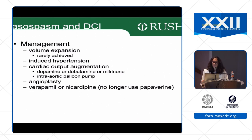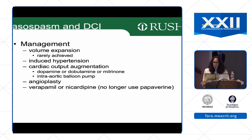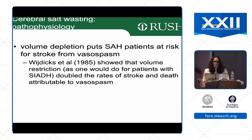Once the aneurysm is treated, we liberalize blood pressure goals — mean arterial pressure from 70 to 150. If the patient clinically deteriorates, we start a pressor to augment blood pressure, and patients do respond to this. You can also augment cardiac output using dopamine, dobutamine, or milrinone, or an intra-aortic balloon pump if cardiac function is compromised. Non-invasive cardiac output monitoring (e.g., FloTrac attached to an arterial line) provides trend data. The ultimate treatment is angioplasty with intra-arterial verapamil or nicardipine.